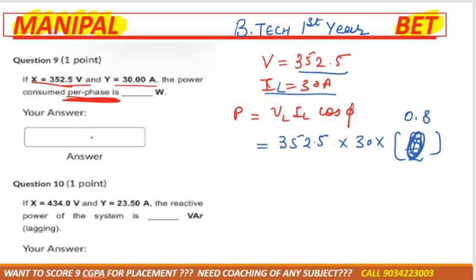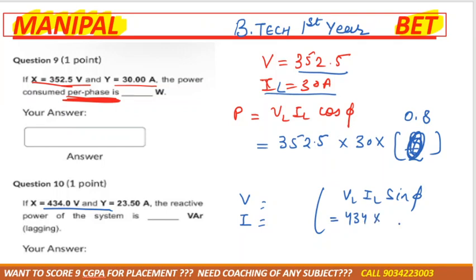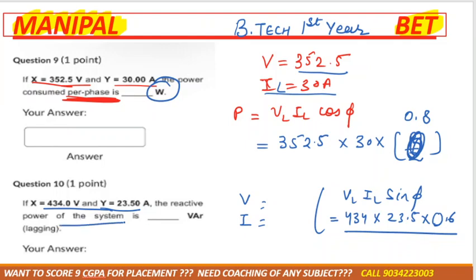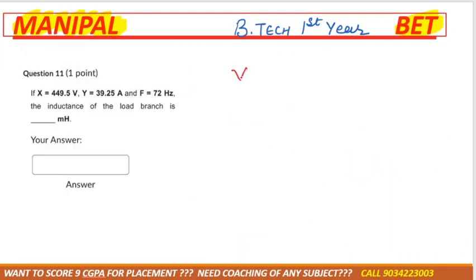Next, they again change values and ask for reactive power: root 3 × VL × IL × sin φ, where VL = 434, line current IL = 23.5, and since cos φ = 0.8, sin φ = 0.6. They mentioned reactive power of the complete system, so we include root 3. Previously it was per phase, so root 3 was not used.